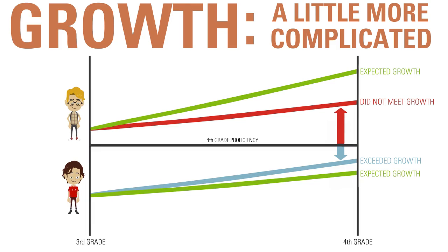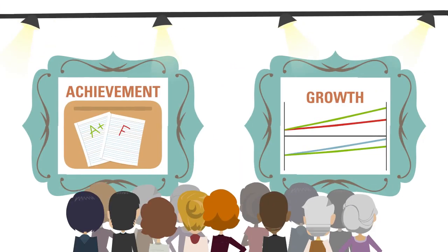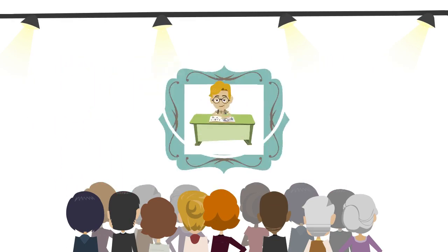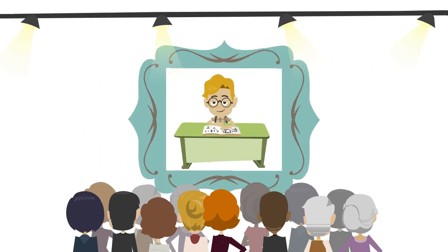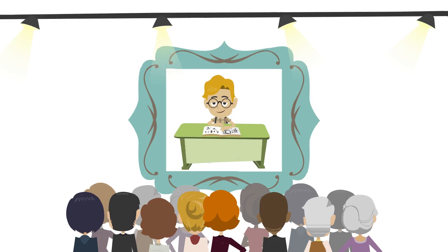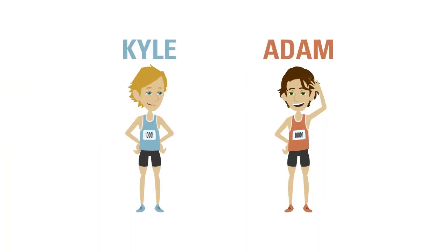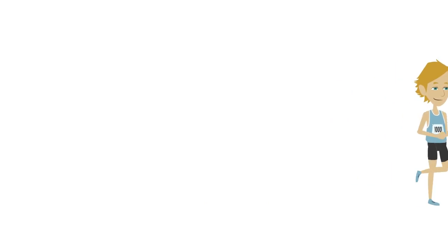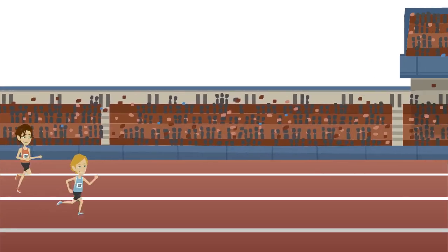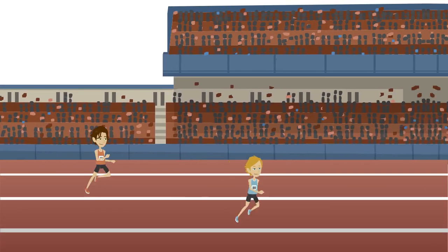By themselves, achievement and growth offer insights to student academic performance. But alone, they don't show us the full picture. Let's look at this another way. Meet Kyle and Adam. They'll be running a one-mile race that represents one academic school year.